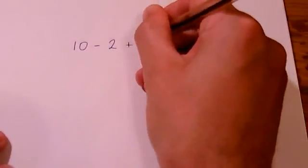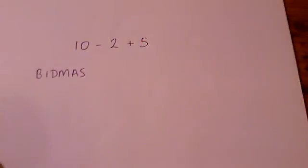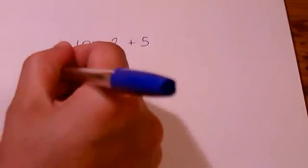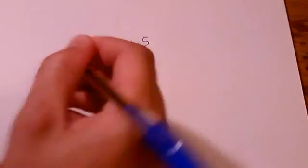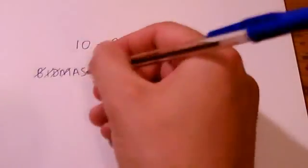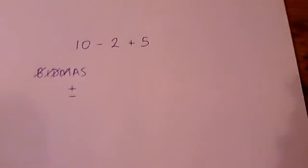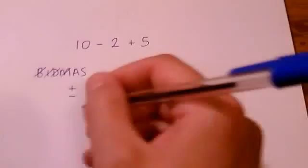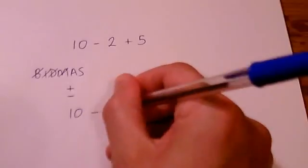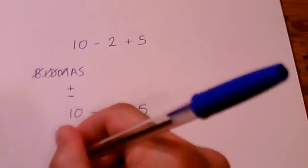If you do 10 minus 2 plus 5, like this. OK. If you go a bit overboard on using BIDMAS, and you're not quite sure what you're doing, but you've just remembered this word. You see there are no brackets. You see there are no indices. There's no division or multiplication. But, you see these letters here. A and then S. Now, some people make the mistake of interpreting that as meaning you do addition before you do subtraction. Like that. So, in this order. Addition first and then subtraction. Let's see what happens if you do that. 10 minus 2 plus 5 becomes, we do the addition first, 10 minus 7, which is 3.